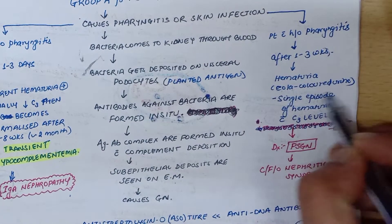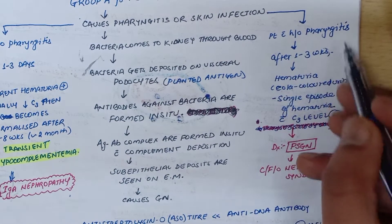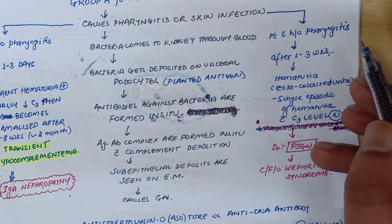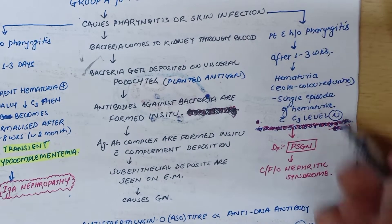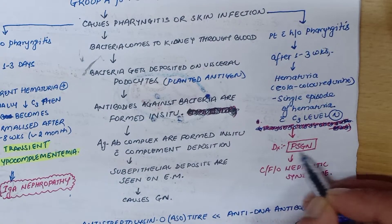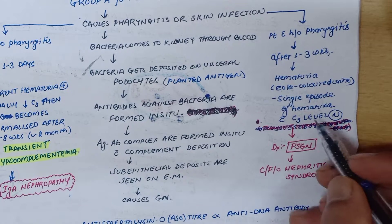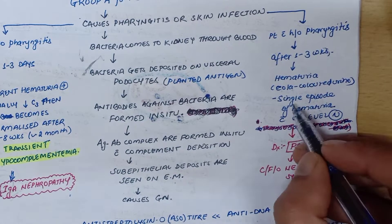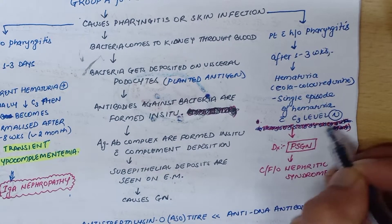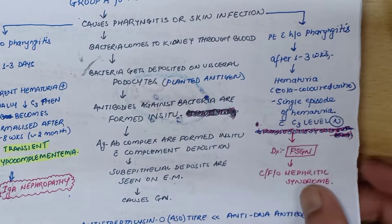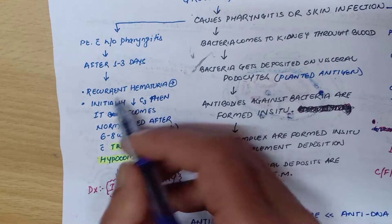Hematuria occurring after one to three weeks of pharyngitis, or within six weeks of skin infections like impetigo, then you can suspect PSGN — post-streptococcal glomerulonephritis. In this case you will see a single episode of hematuria with normal C3 level.